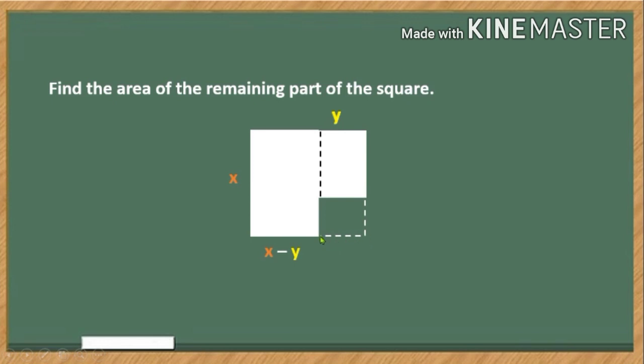But earlier we cut a smaller figure, a square with y as the measure of its side, right? Now in mathematical expression, cut is translated as subtraction. That's why we subtract y from x, or we have this expression x minus y. Similarly on this part, y is cut from here, so we have the expression x minus y.